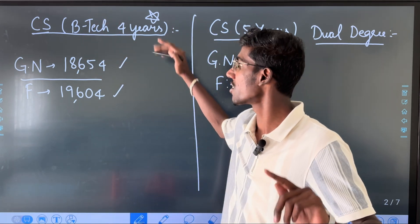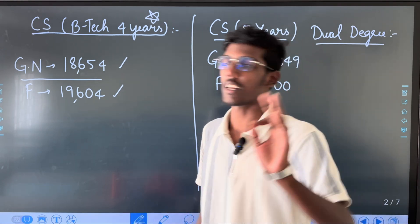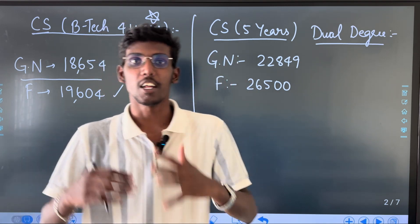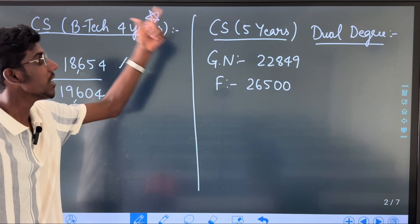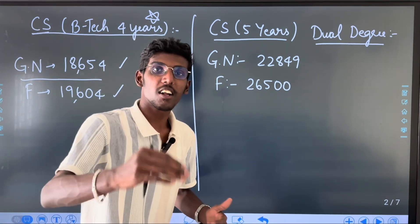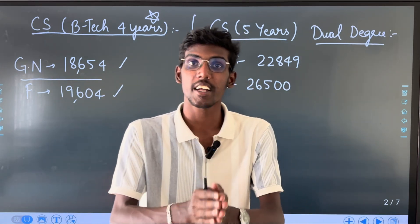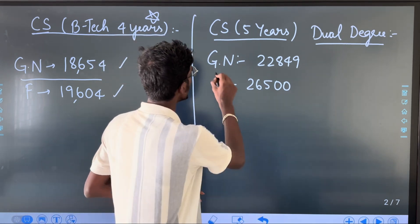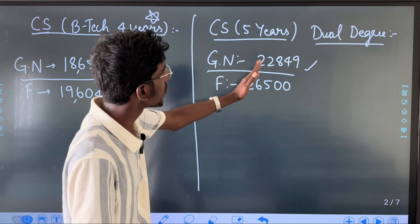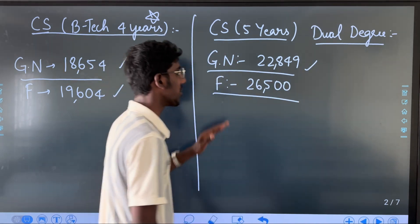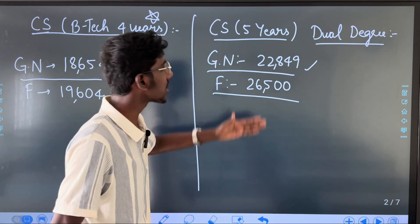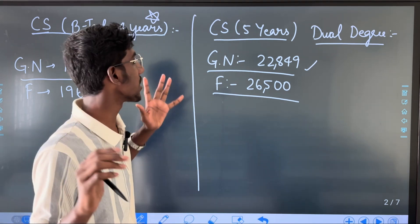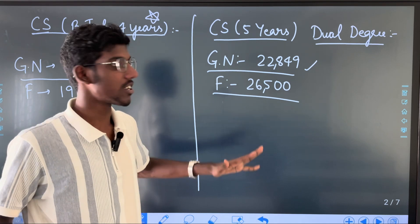If you look at CS B.Tech 4 years, you can see the rank. Next, CS 5 years Dual Degree. The rank is 22,849, and the female is 26,500. It's different than the rank of CS 4 years. You have to meet the rank of around 21,000. You have to meet the rank. The rank is the qualification.